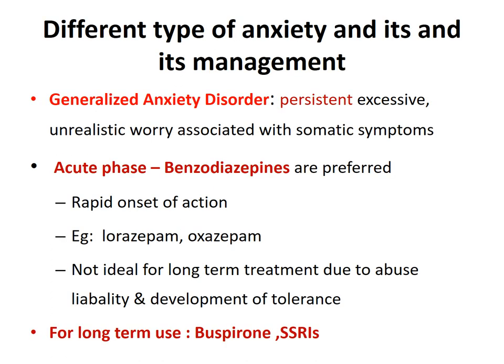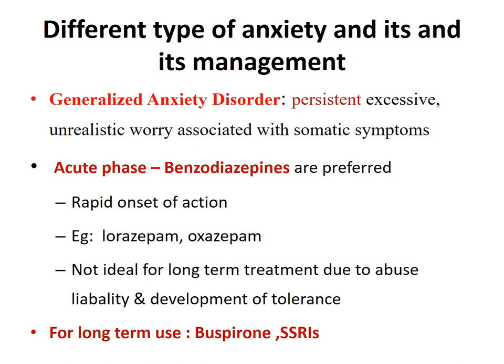Coming to the management of different types of anxiety. The first is generalized anxiety disorder, which means a persistent or excessive, unrealistic worry associated with somatic symptoms. For the management of GAD, we can classify patients into an acute phase or a chronic phase. For the acute phase, benzodiazepines are preferred because of their rapid onset of action — for example, lorazepam or oxazepam. But they are not ideal for long-term treatment due to the risk of development of tolerance as well as abuse liability. For long-term cases, we can use selective serotonin reuptake inhibitors or azapirones.